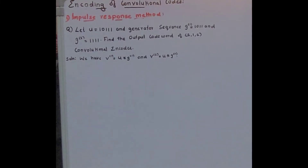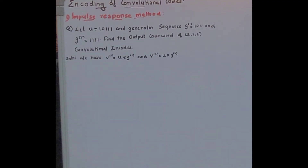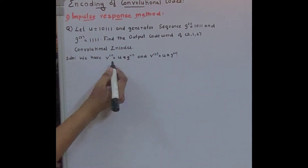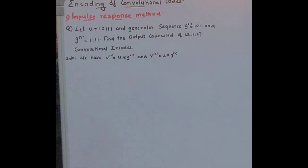Now consider the problem: let U = 10111, generator sequence G1 = 1011, and G2 = 1111. Find the output code word of the 2-1-2 convolutional encoder. To find the output code word, we need to find V1 and V2, then combine them to get the final output.